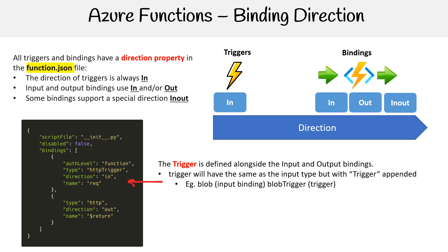The trigger is defined alongside the input and output bindings. So trigger will have the same as the input type but with trigger appended. For example, if we have blob, that would be our input binding, then we'd have blob trigger as the trigger.